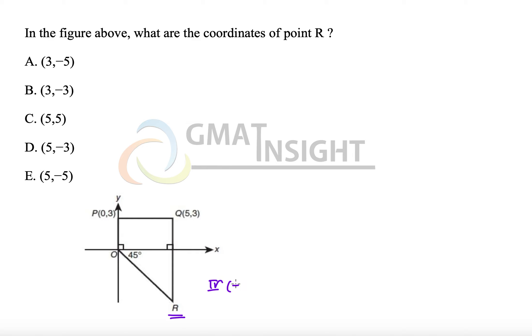In the fourth quadrant x coordinate is positive and y coordinate is negative. So we have to eliminate all the options which do not satisfy this condition.